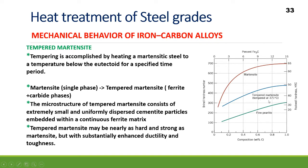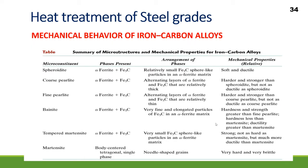Tempered martensite may be nearly as hard and strong as martensite but with substantially enhanced ductility and toughness. Since martensite is a very hard and brittle phase, we want better mechanical properties — high hardness and strength but without brittleness. The tempering is done at around 371°C. Increasing the cementite particle size will decrease the ferrite-cementite phase boundary area, resulting in a softer and weaker but tougher and more ductile material.